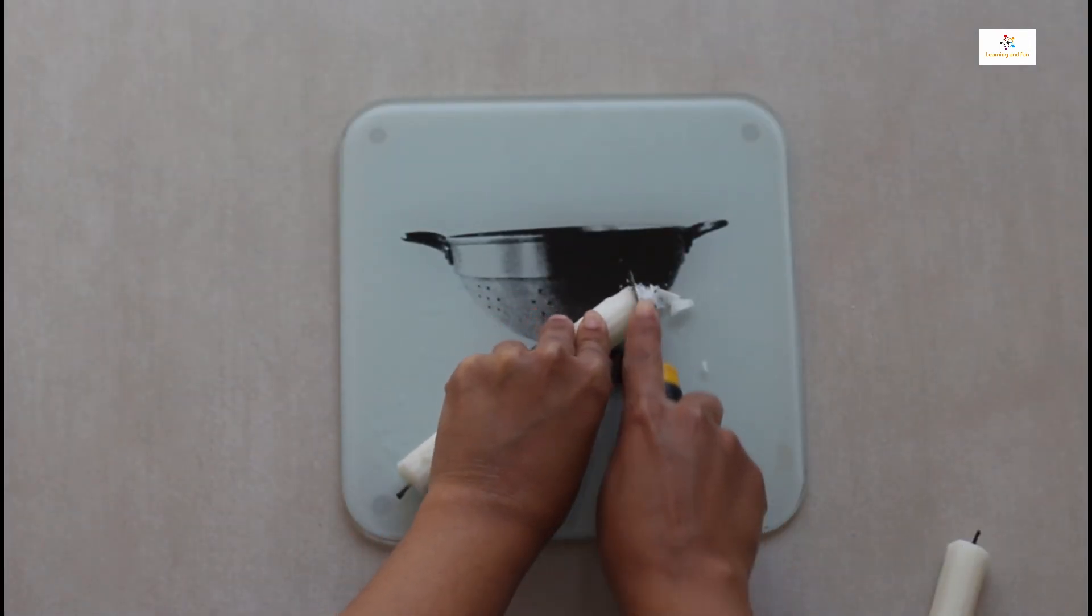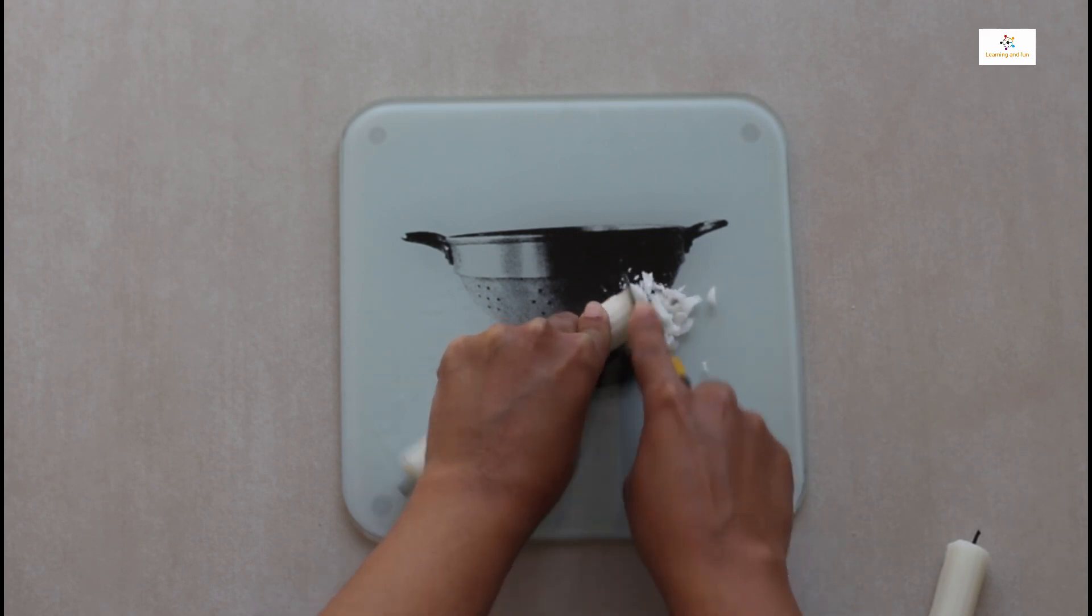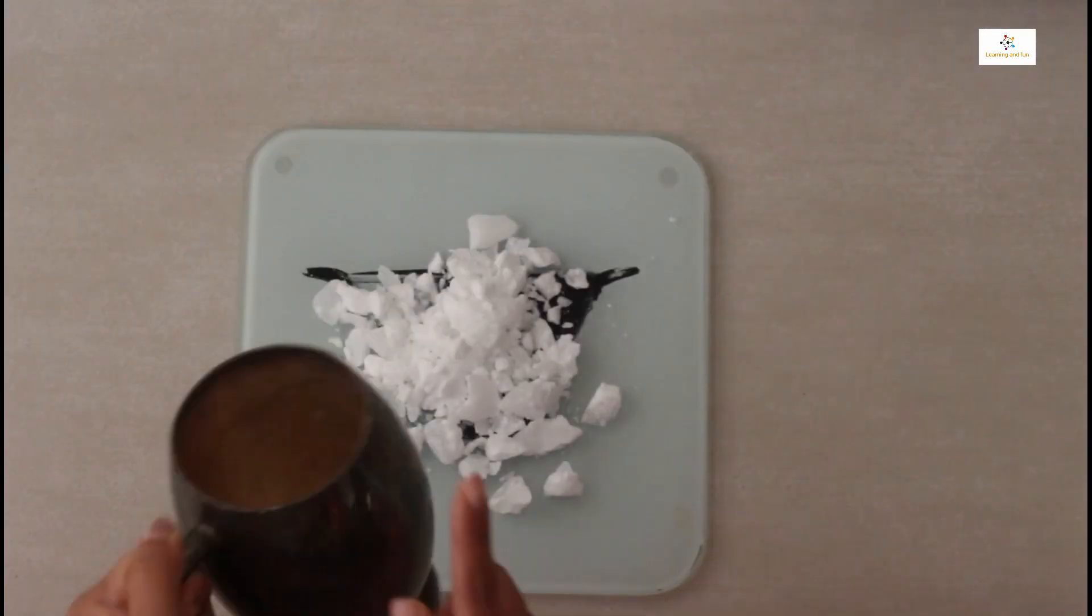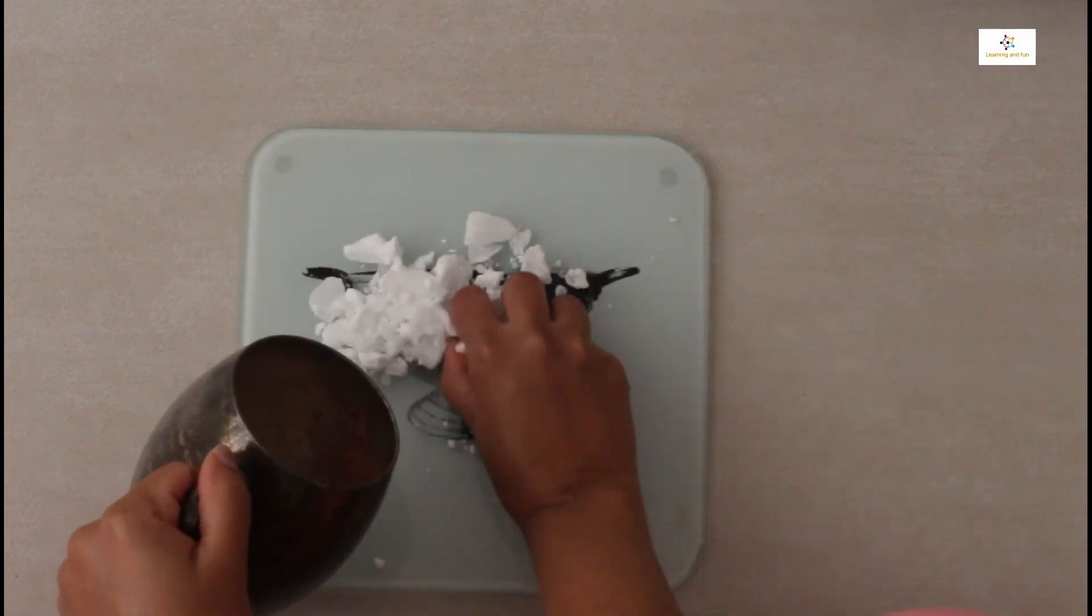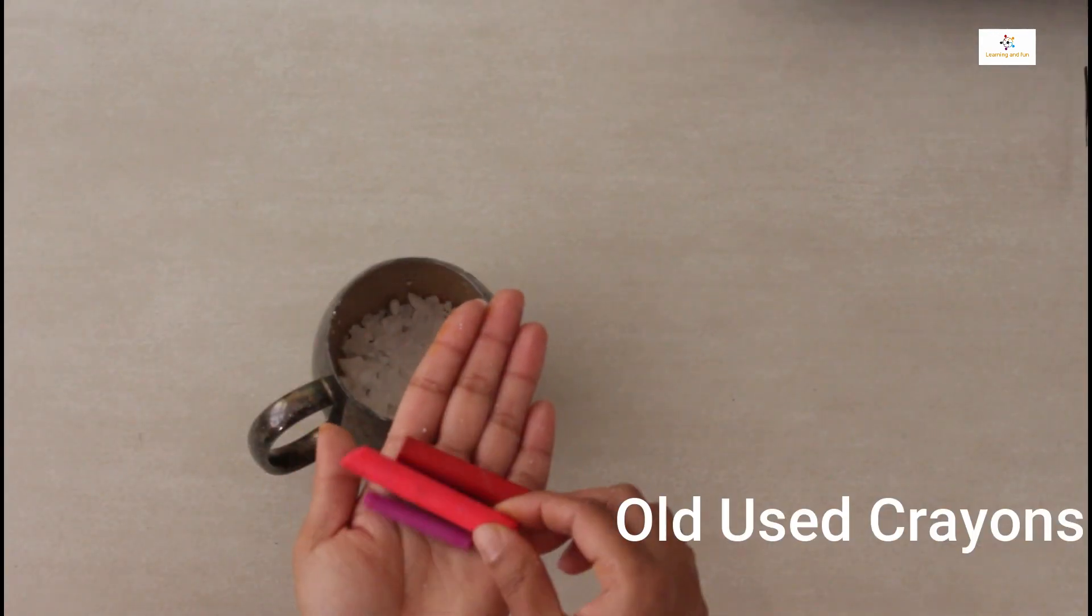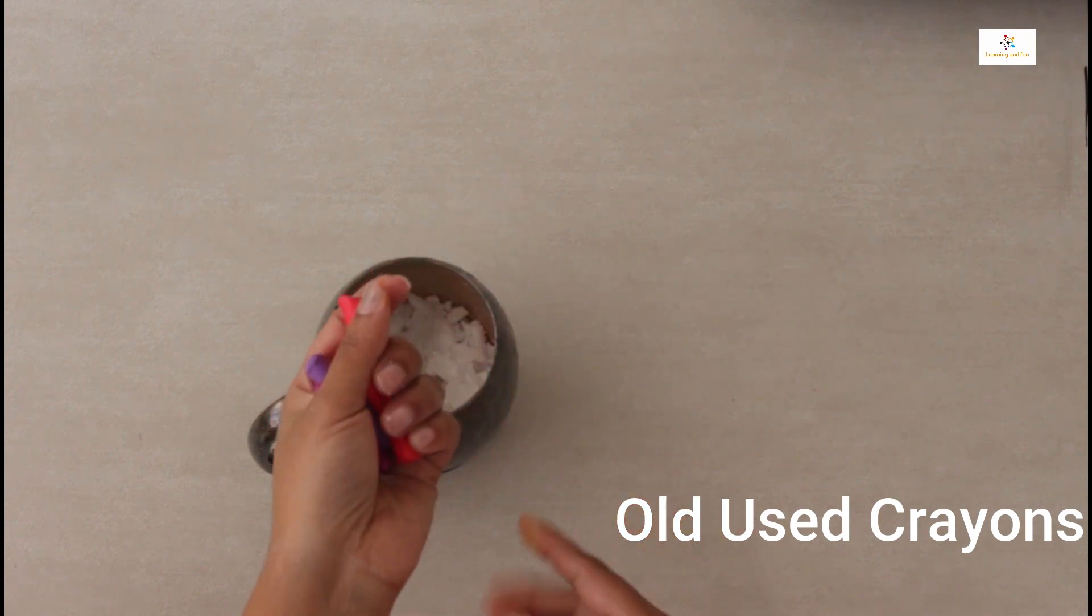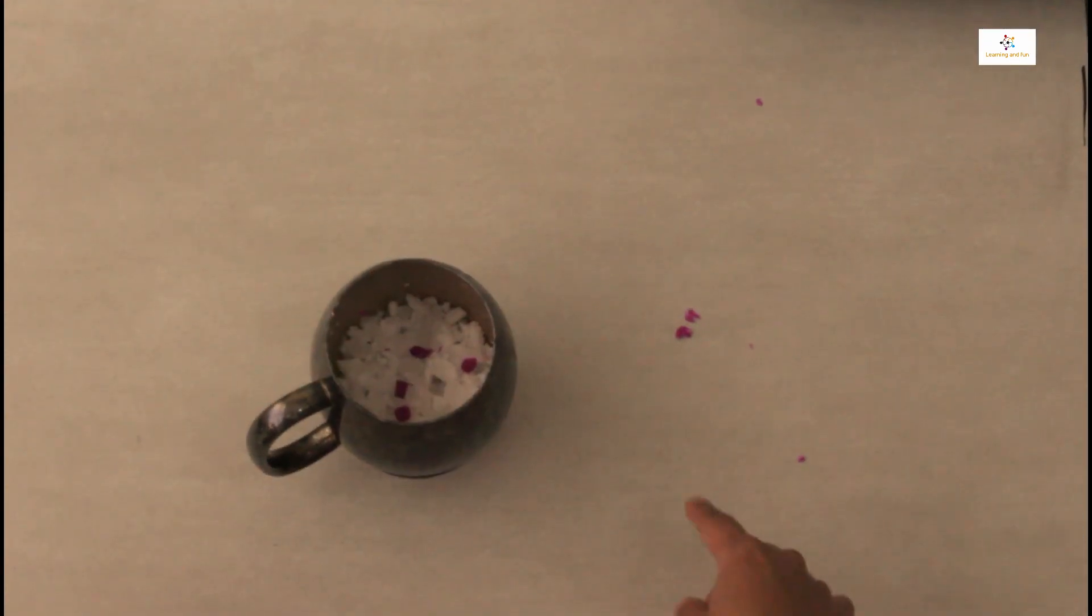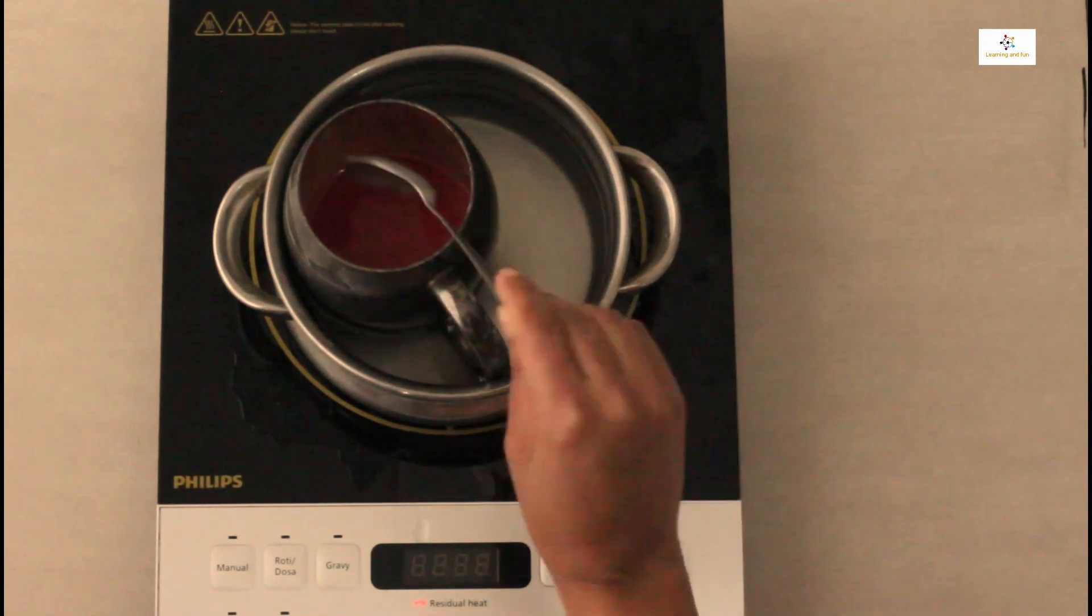First we are taking the old used candles and cutting them into small pieces. Now I'm putting it into the container so that we can melt the wax. First of all we are making the red color. For that I'm using the crayon. I've added the cut crayons into the wax and melting it.